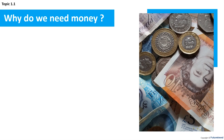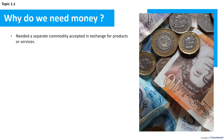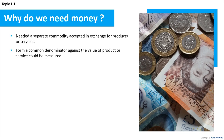Why do we need money? Before money, the process of bartering was adequate for exchanging goods and services. However, as the world became more complex and the value of goods and services increased, it became impossible for people to match what they had to offer to what others could supply. What was needed was a separate commodity that people would accept in exchange for any product or service — one that would form a common denominator against which the value of a product or service could be measured.